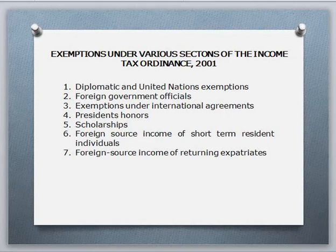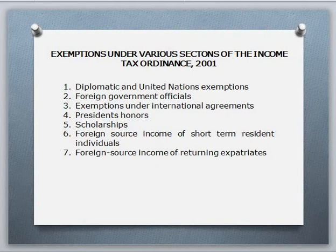The fifth point is scholarships: any scholarship granted to a person to meet the cost of their education shall be exempt from tax under this ordinance, including where the scholarship is paid directly or indirectly. Also, foreign source income of short-term resident individuals: income of an individual who is a resident only by reason of employment and who has been resident in Pakistan for a period not exceeding three years shall be exempt from tax under this ordinance.